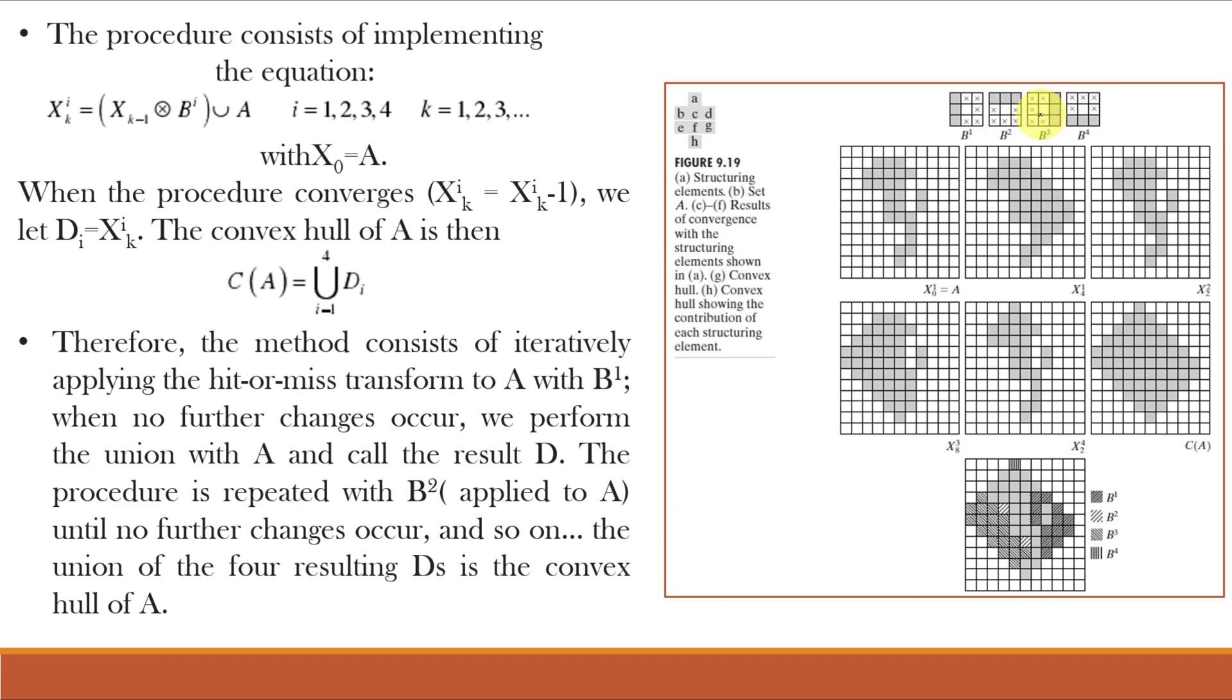Here four structuring elements are used for implementation. First of all x1 is equal to x of k minus 1 hit or miss b1 union of a. So here after finding all xi k values we have to perform union of them say that union is d1.